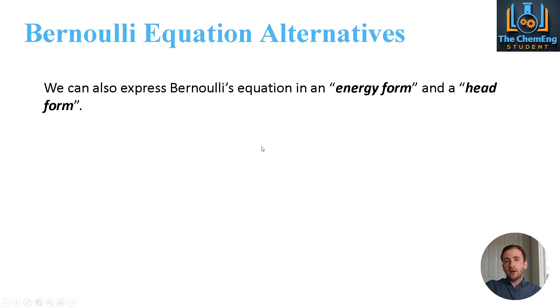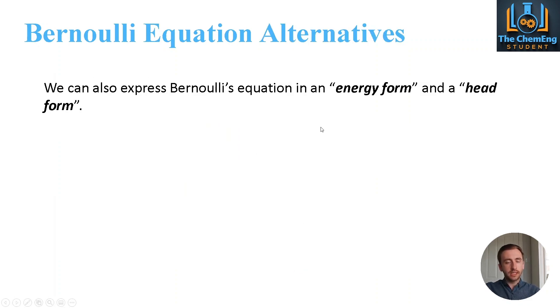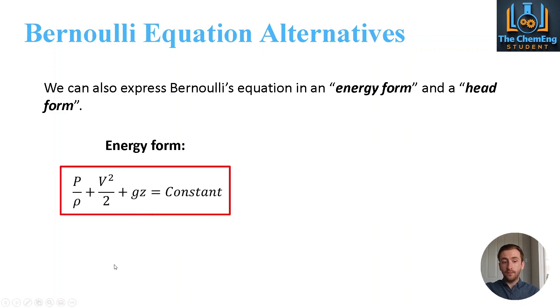Now, there are alternatives because, as it stands just now, that is only useful based on a certain given amount of data. But we can also express Bernoulli's equation in energy form and also in head form. And in energy form, what we do is we have divided by the density. So we now have P over rho plus v squared over 2 plus gz. That is it in terms of its energy form. And again, they're all equal to some constant.